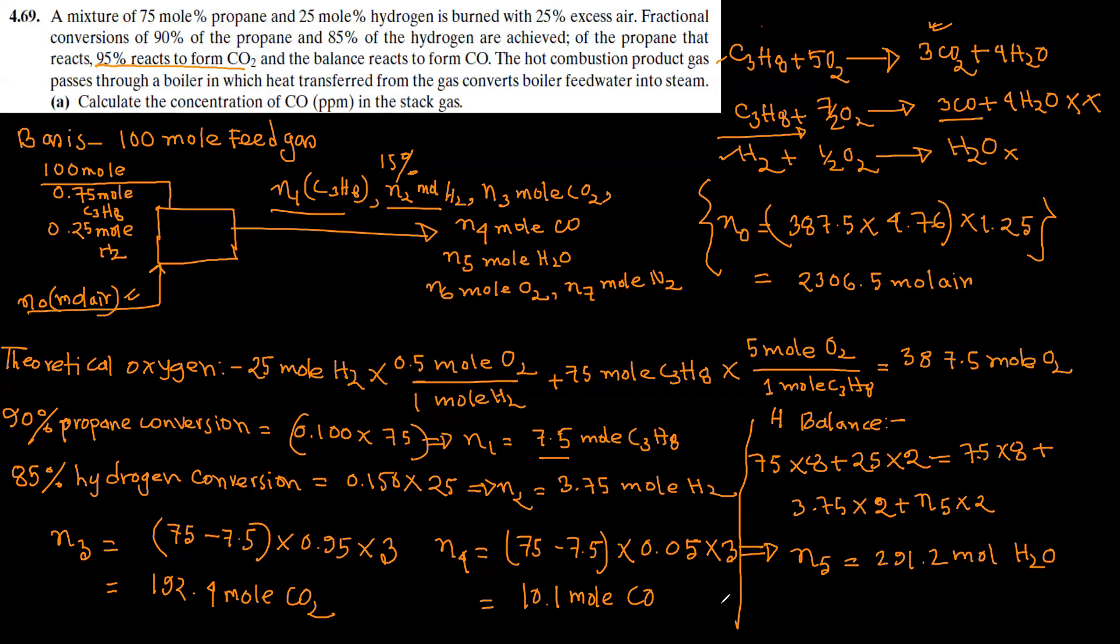Similarly, from oxygen balance, n6 is 144 moles of oxygen. And n7 mol nitrogen: the ratio is 0.79, so it's 0.79 divided by 0.21 times n0, which gives 1365 moles of nitrogen.